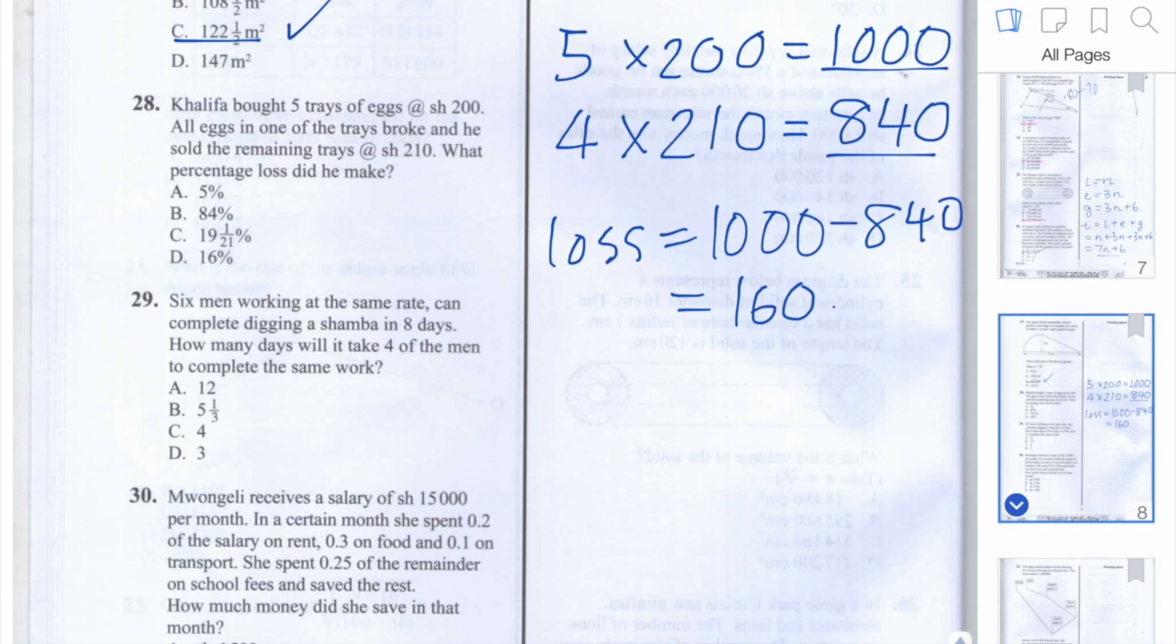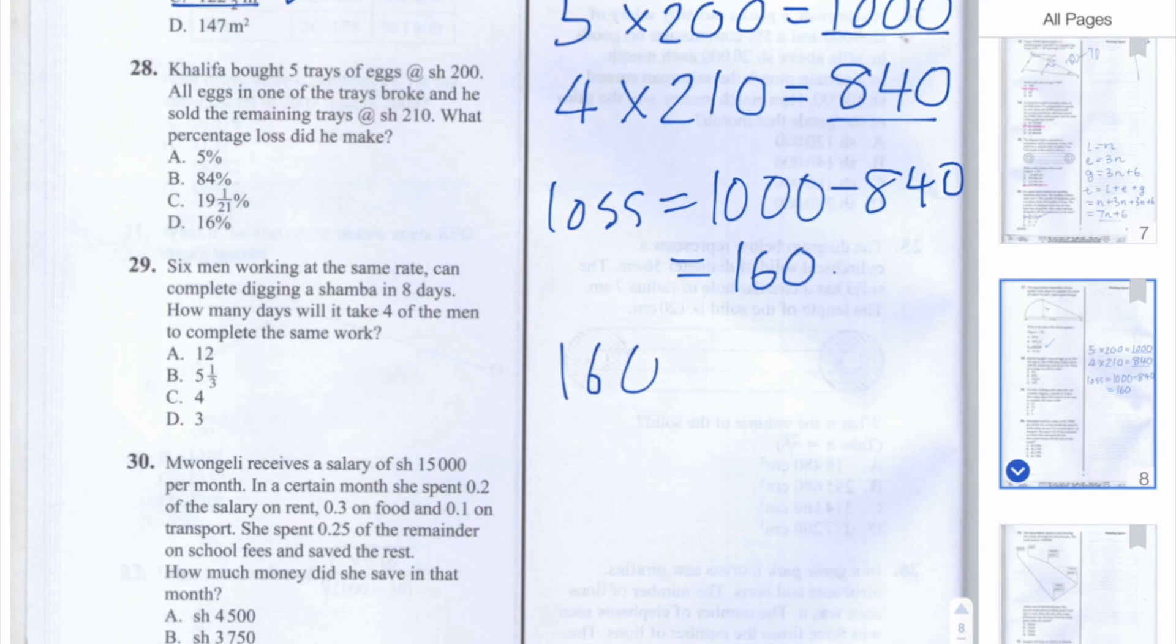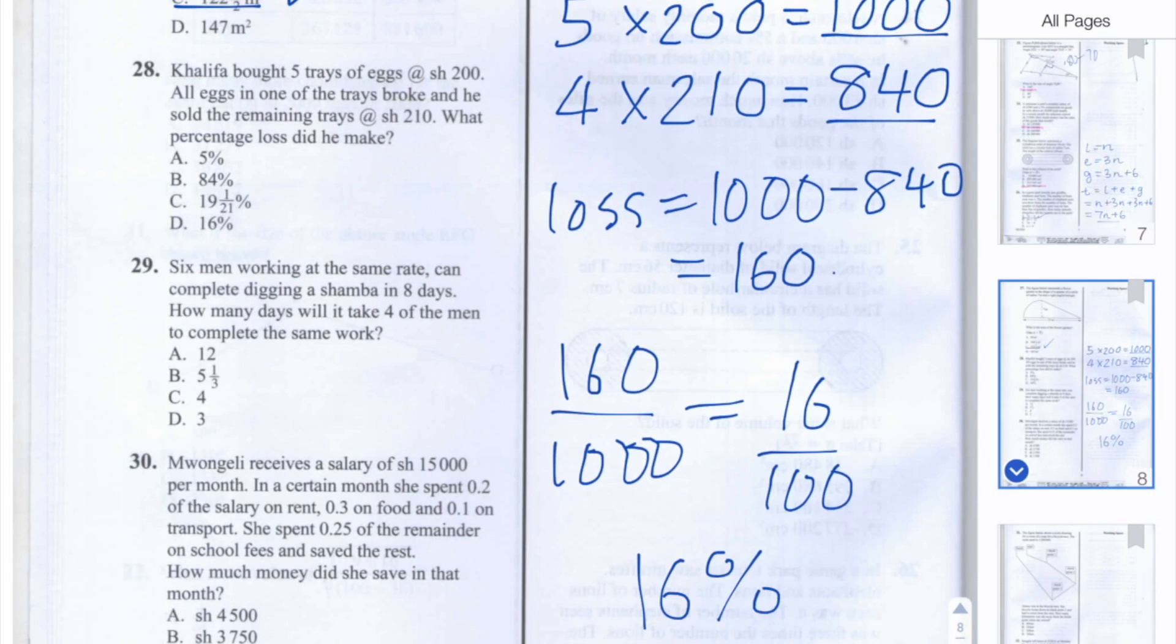To find out his percentage loss we need to work out 160 divided by 1,000 is equal to 16 over 100. And the answer to 28 is D, 16%.